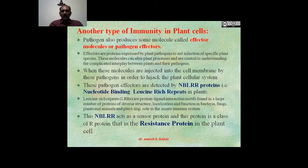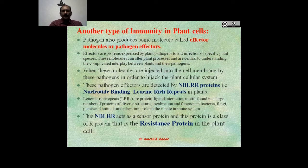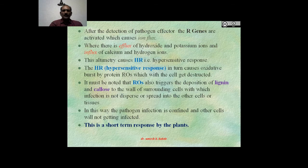When effector molecules are injected into the cell membrane by the pathogen to hijack the plant cellular system, these pathogen-effectors are detected by NBLRR protein — that is nucleotide-binding leucine-rich repeats — in plants. The leucine-rich repeat, or LRR, is a protein-ligand interaction motif found in a large number of proteins of diverse structures, localization, and function in bacteria, fungi, plants, and animals, and plays an important role in the innate immunity system. This NBLRR acts as a sensor protein and is a class of R protein, that is resistance protein, in the plant cell.